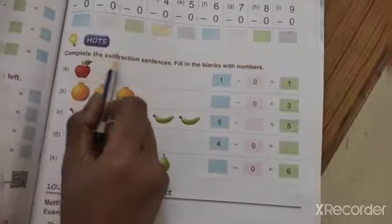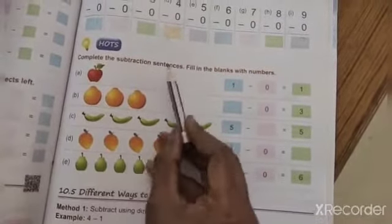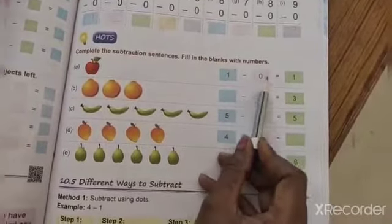Okay children. Now next HOTS. Complete the subtraction sentences. Fill in the blanks with the numbers. So first one.